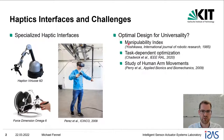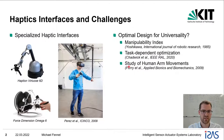For example, the maximization of a manipulability index, a task-dependent optimization framework, and a detailed study of the human arm movements in activities of daily life were suggested to obtain an optimal manipulator design.